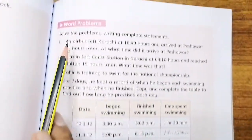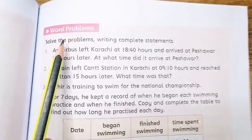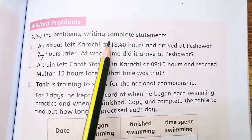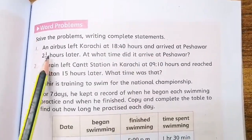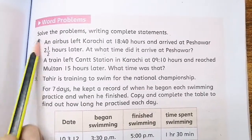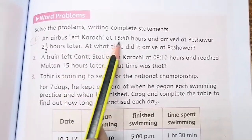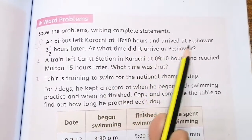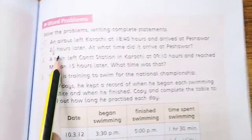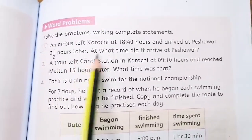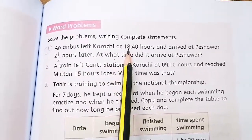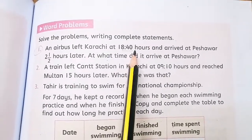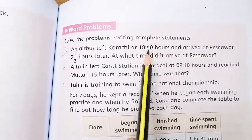We will solve problems from Exercise 5D, writing complete statements. Question 1: An Airbus left Karachi at 1840 hours and arrived at Peshawar 2.5 hours later. 1840 means 6:40 pm, and it is a 24-hour clock.